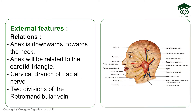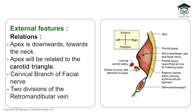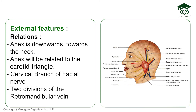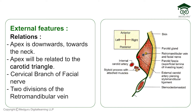The apex is directed towards the neck. The apex has three relations: first, the carotid triangle; second, the cervical branch of the facial nerve, which supplies the neck; and third, the two divisions of the retromandibular vein.